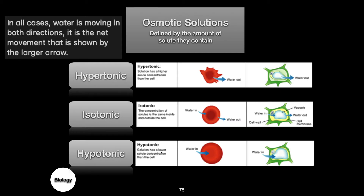In a hypotonic solution — one with a lower solute concentration than the cell — water tends to move into the cell in larger amounts. There is some water moving out, but if the cell takes up too much water it will burst, which is very dangerous. For the plant cell, the cell wall keeps the cell relatively the same size. Water moving in is what happens when you water plants — it causes the cells to be very rigid, making the plant firm. When plants don't have water in a hypertonic environment, those are the plants that will wilt.